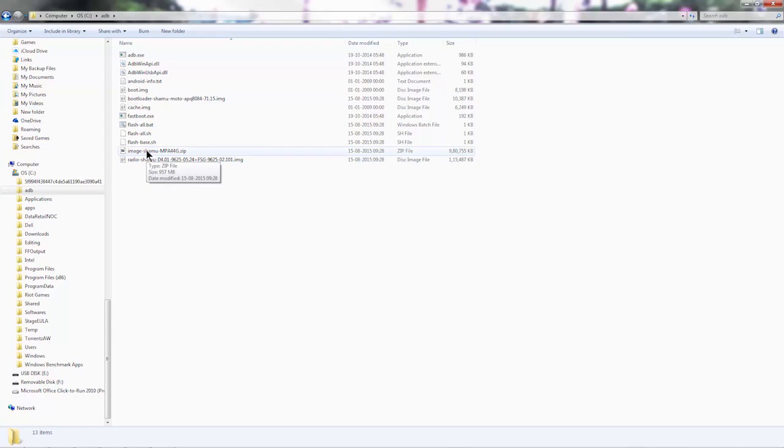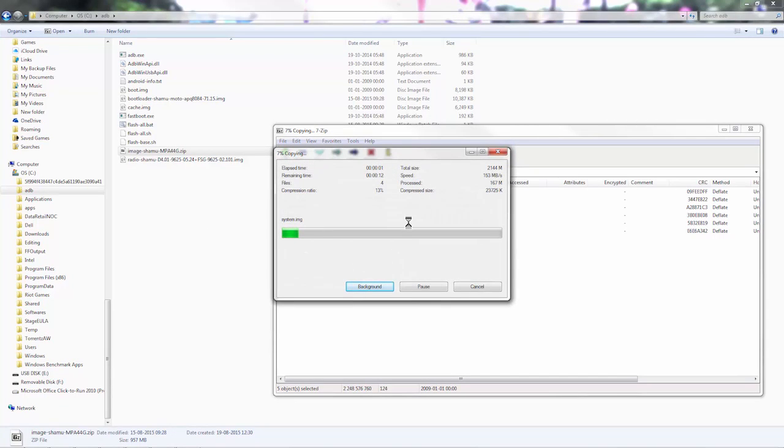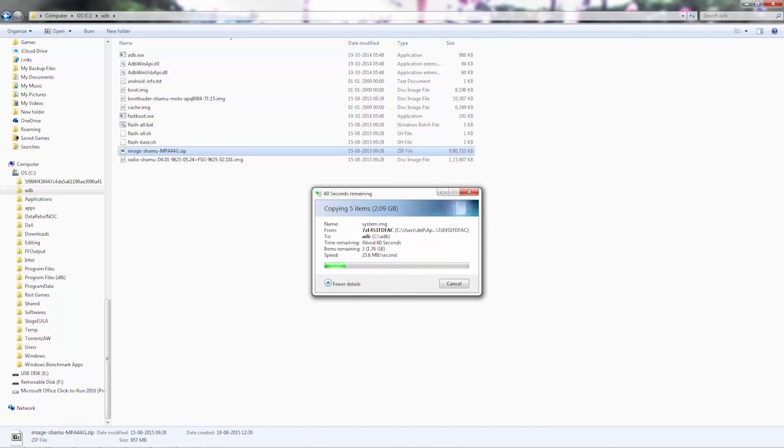Now to fix that error which is for the system.img file, you need to manually flash the files. For that, first you need to extract the image file that was earlier there in the package. There is a zip file that you need to extract. Under that file you will find multiple IMG files including the system.img. Place them in the same folder where you have the ADB files so that flashing is done seamlessly.